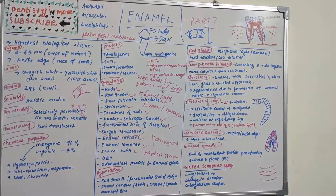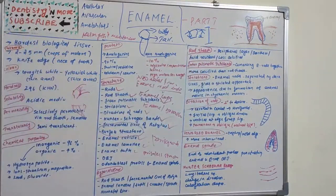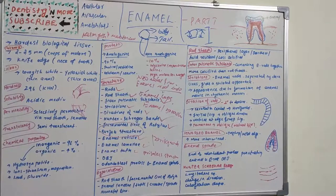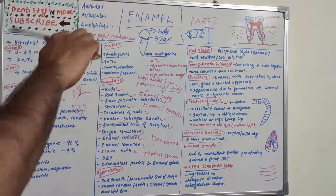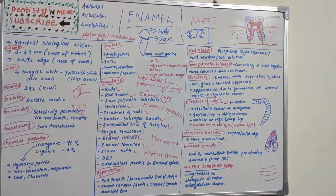The dentino-enamel junction (DEJ) is a scalloped structure. The surface of dentin at the DEJ is pitted, with shallow depressions of dentin that fit rounded projections of enamel. It appears scalloped due to the intermingling of crystals of dentin and enamel, creating a strong interlocking structure.